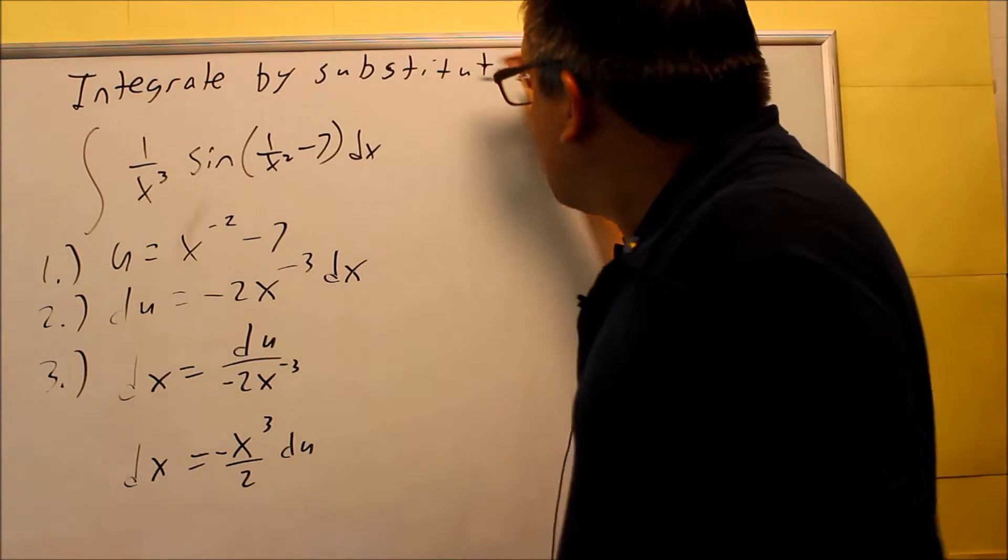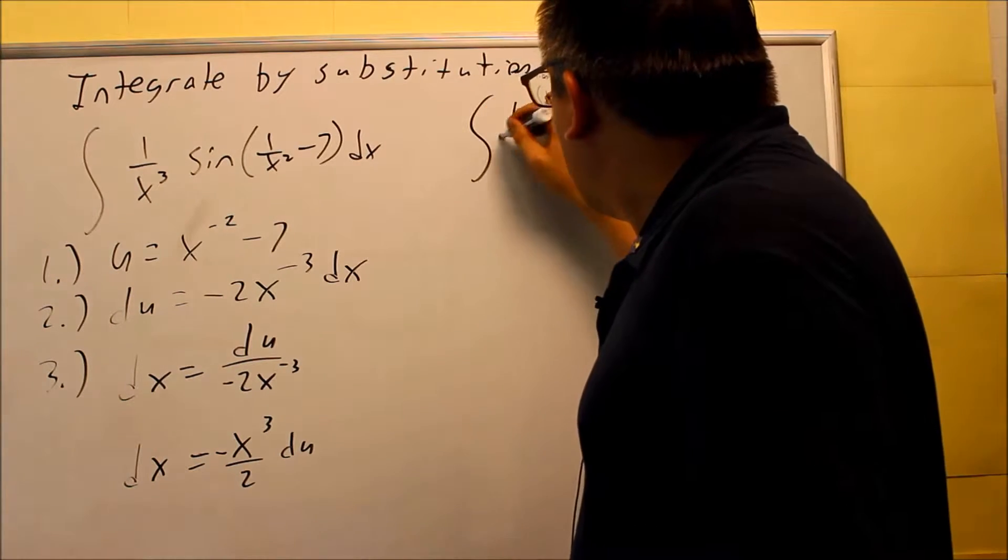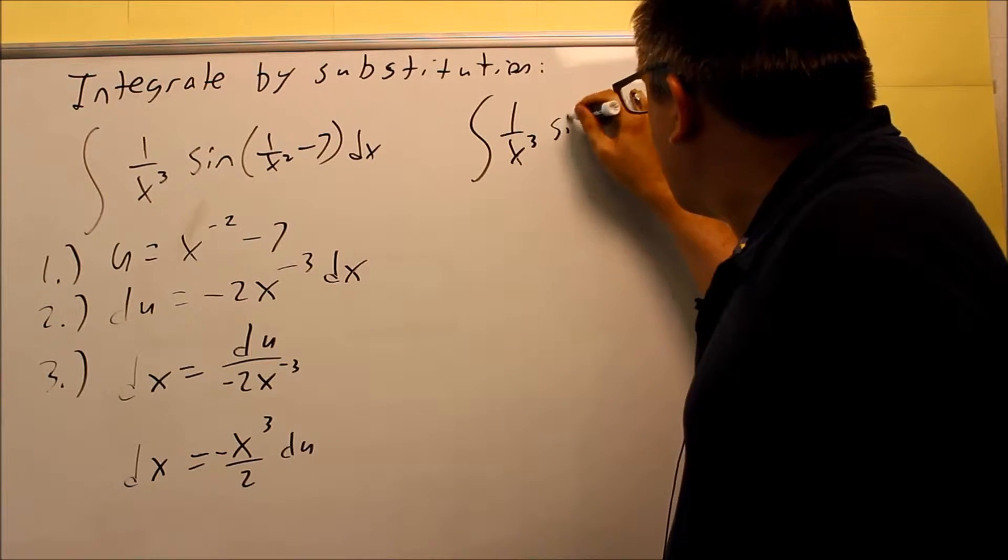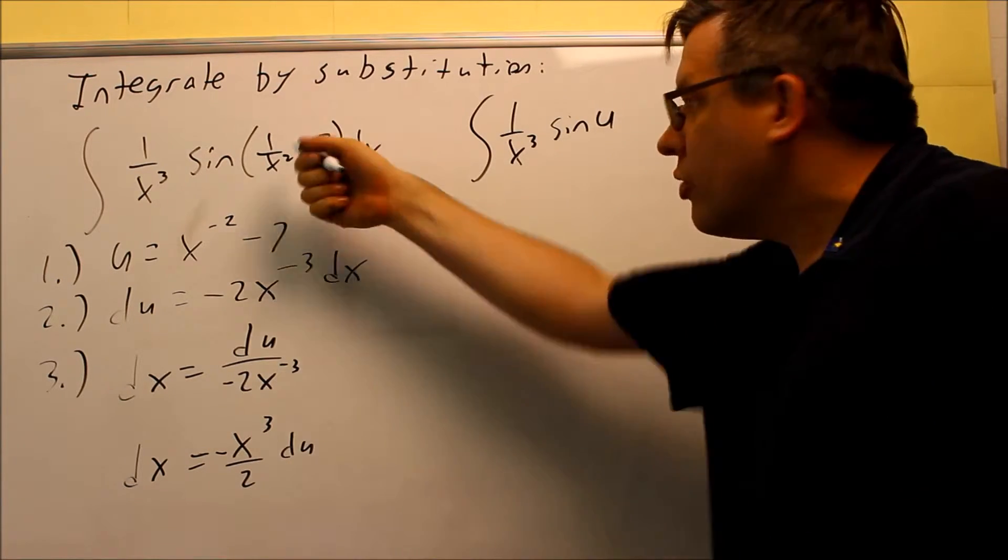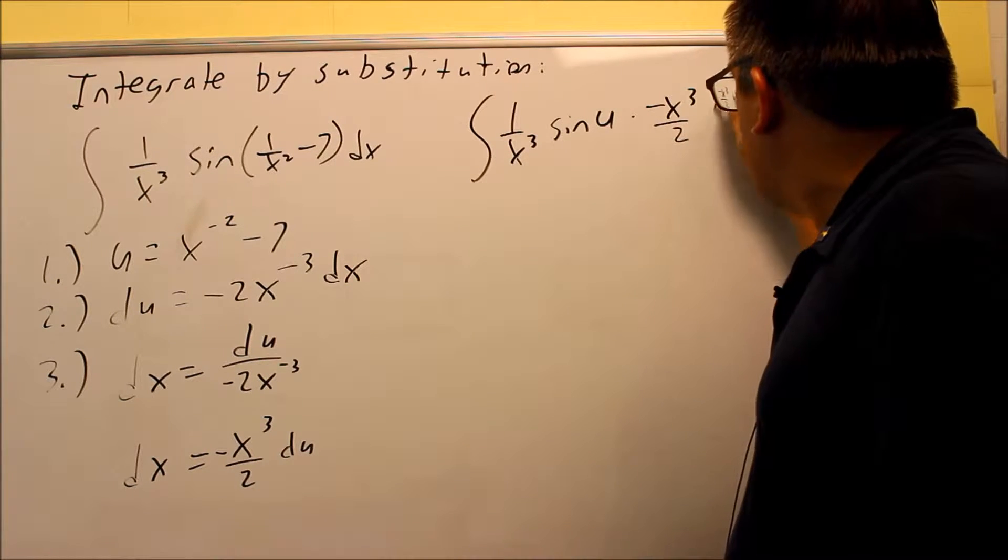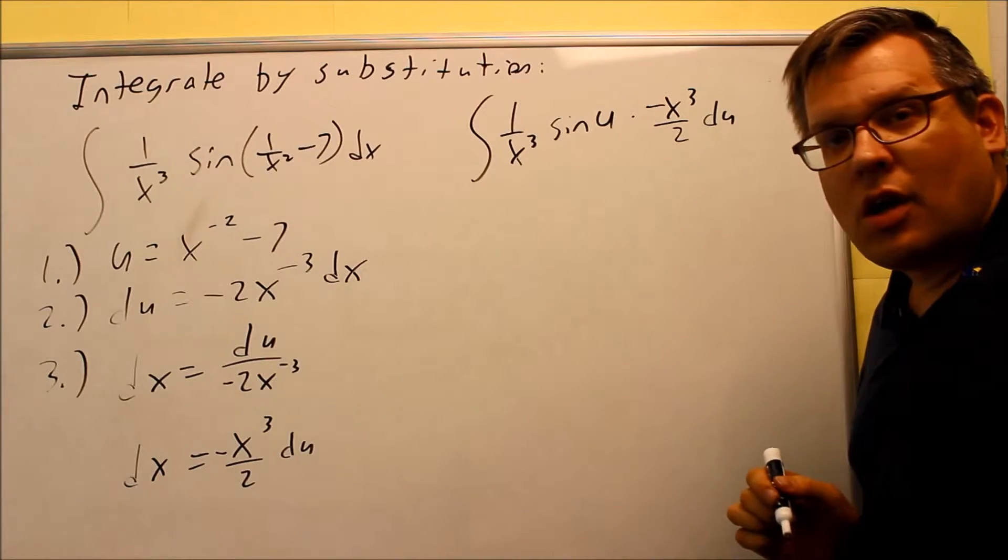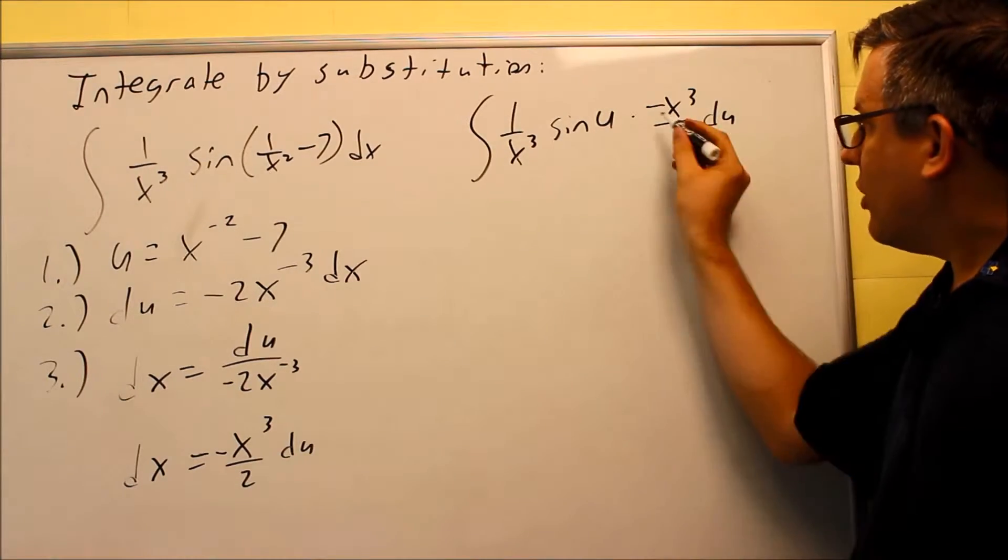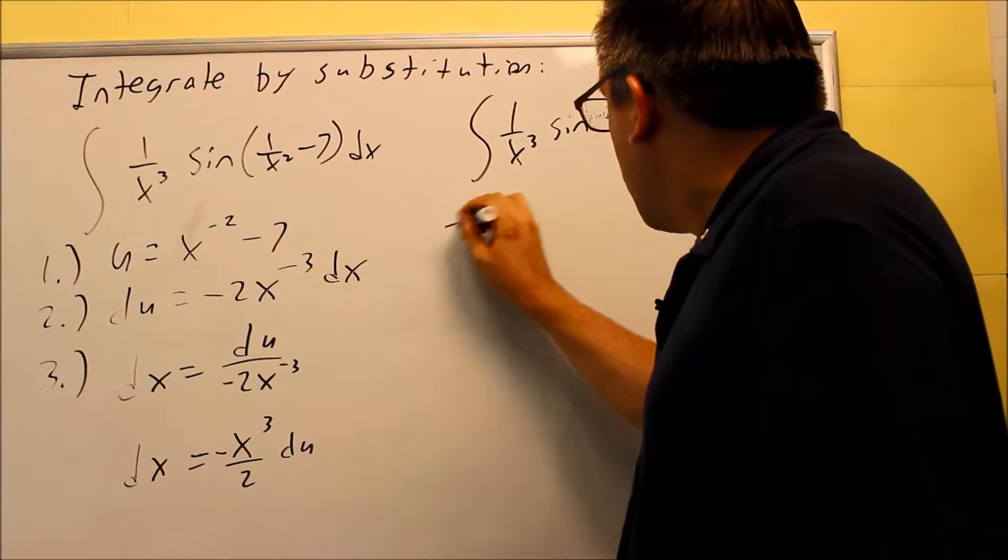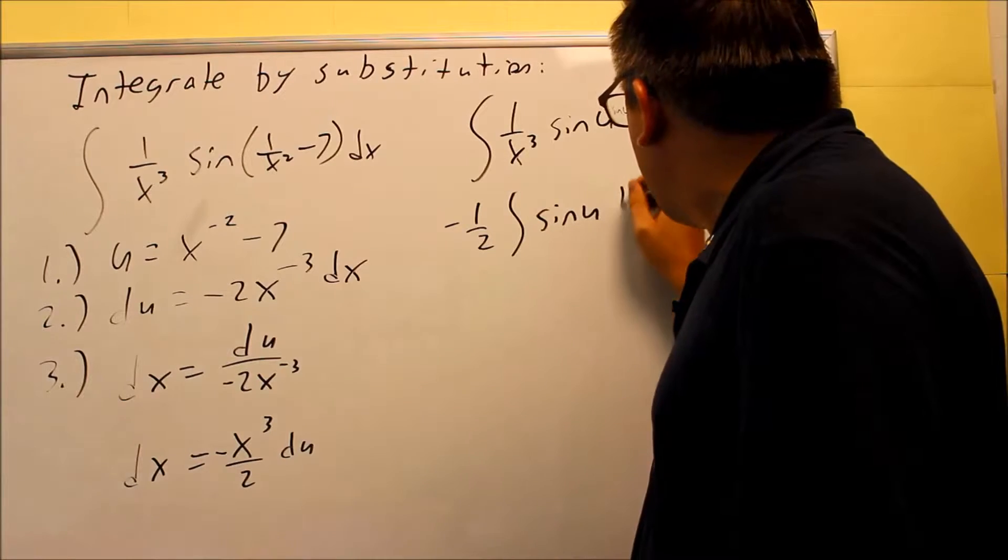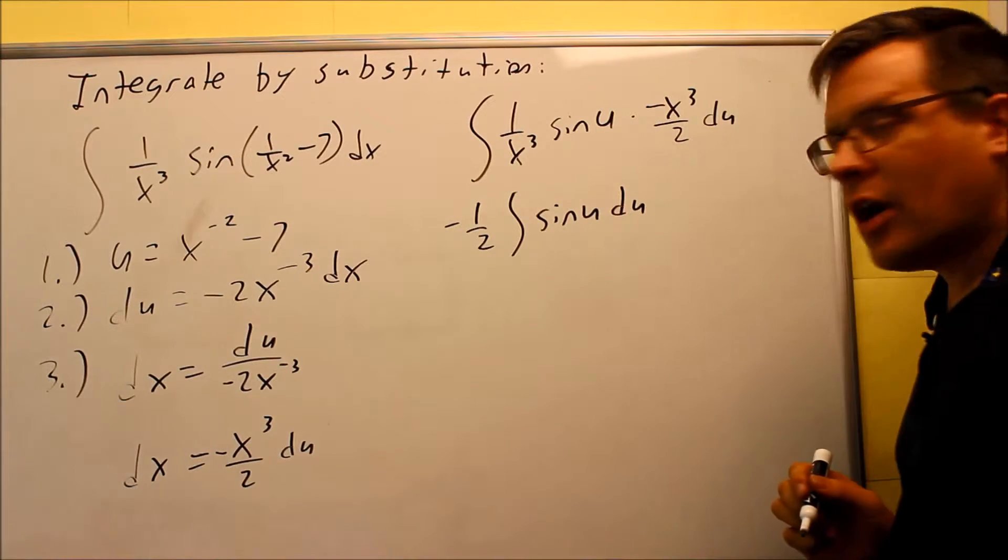We're ready to put this back into our original one. I have 1 over x cubed over there, and then I have sine of, we put u in for all that, and then times negative x cubed over 2, and then du. By doing that, we can see that the x cubes are going to cancel, and I have a negative 1 half, which is going to go on the outside of my integral. Sine of u du, that's what I have left over.